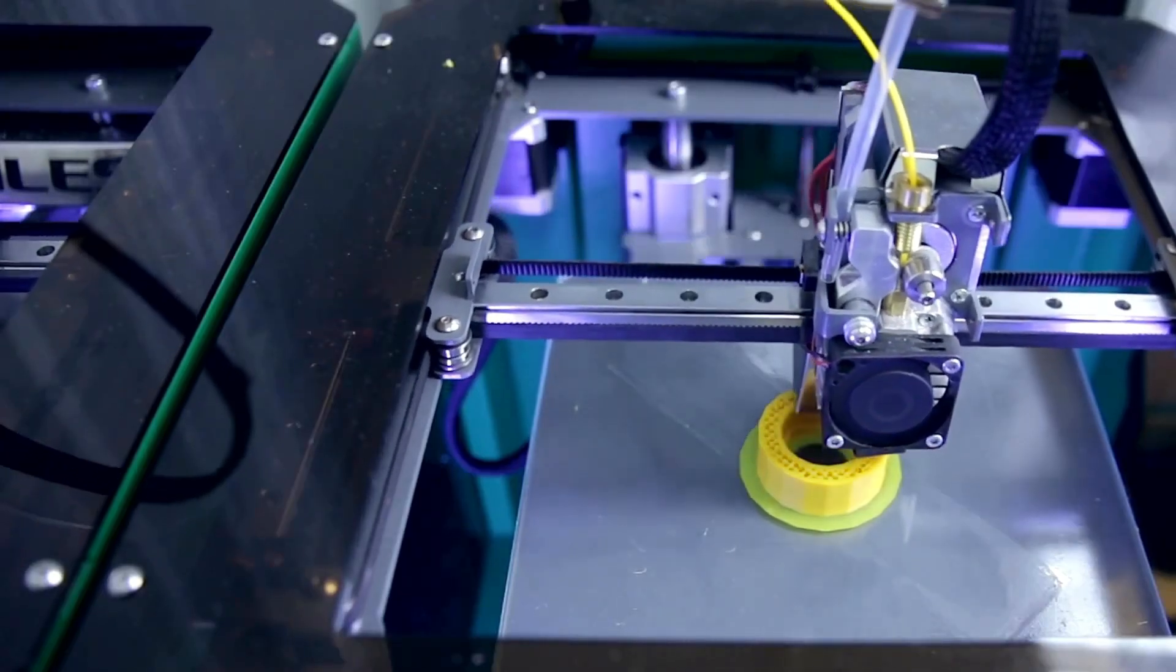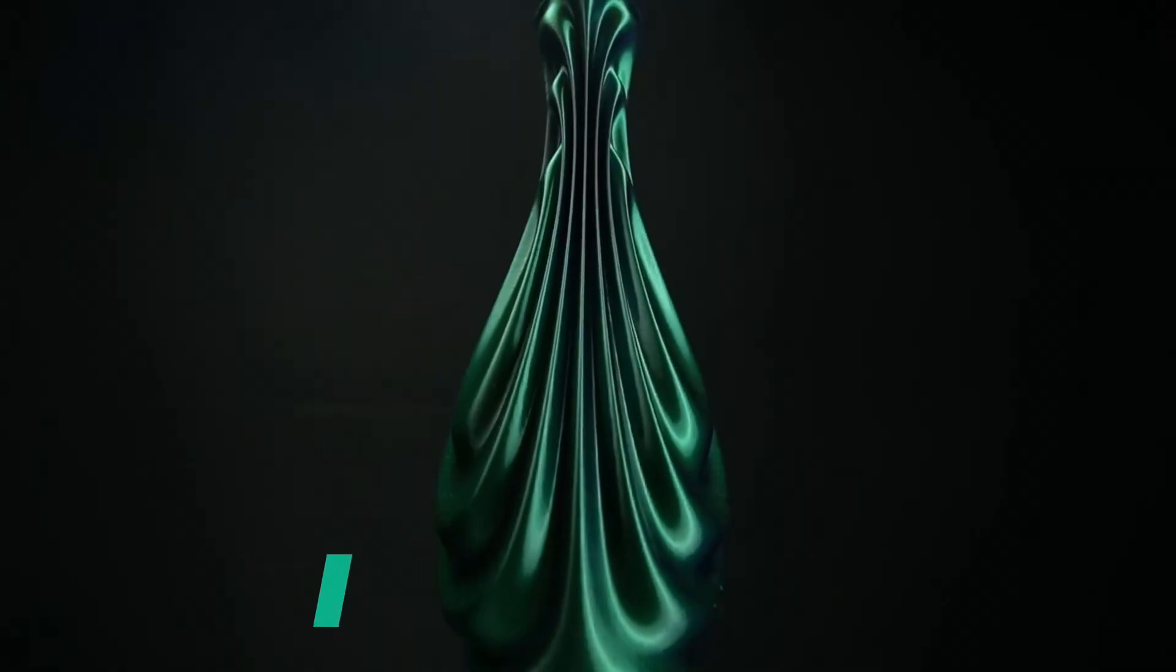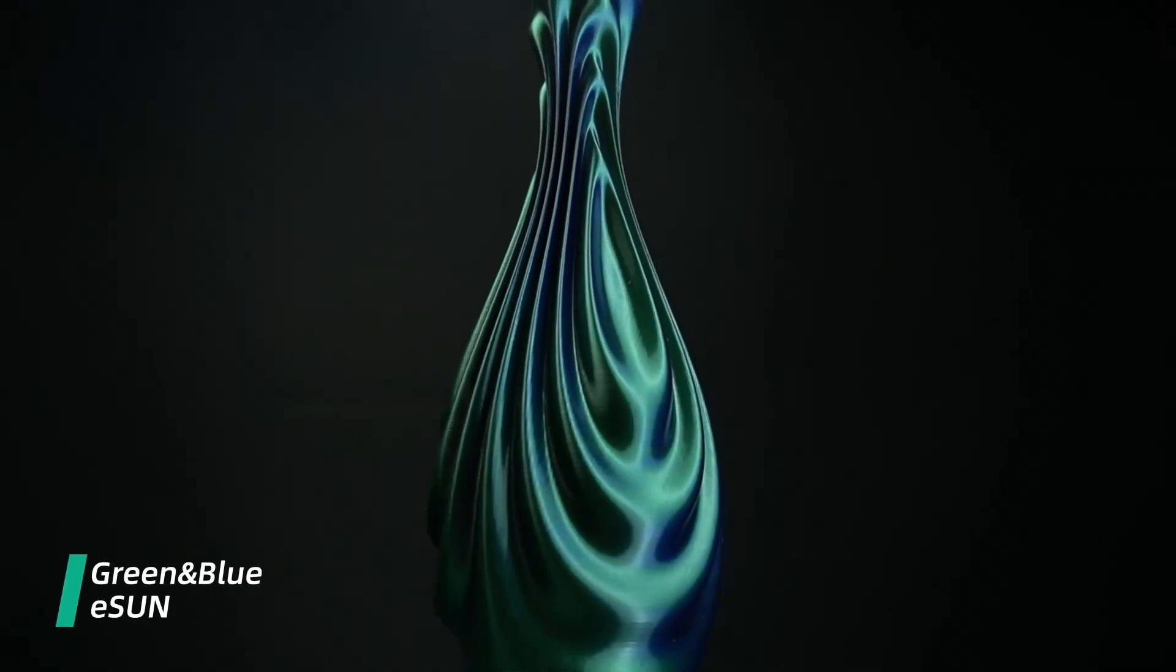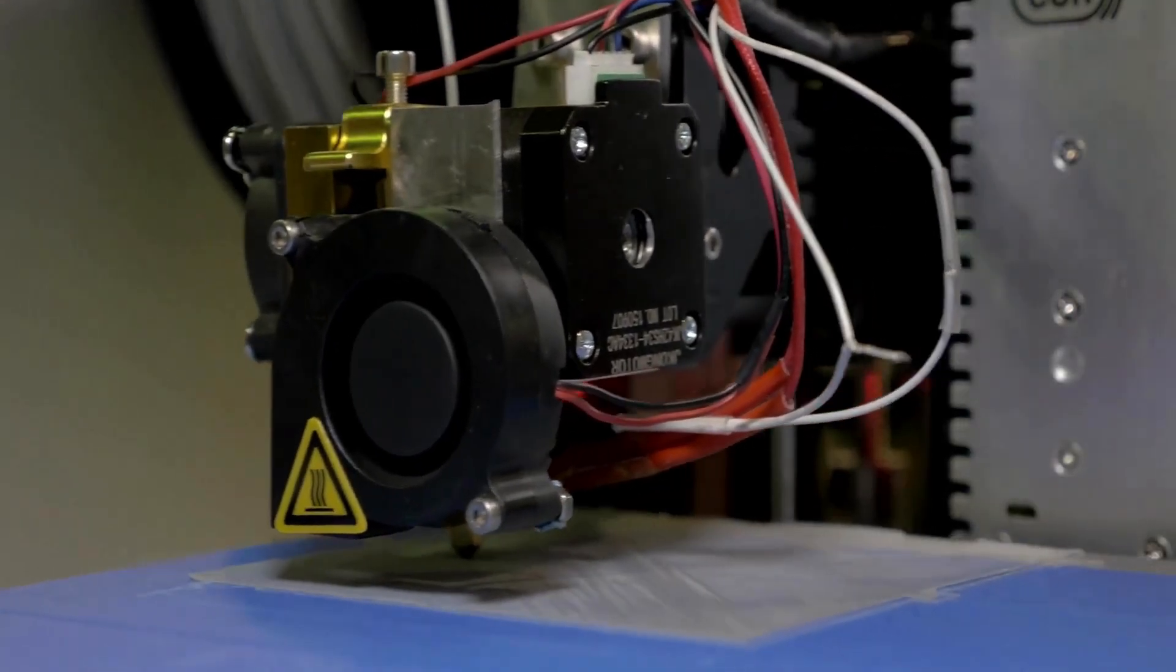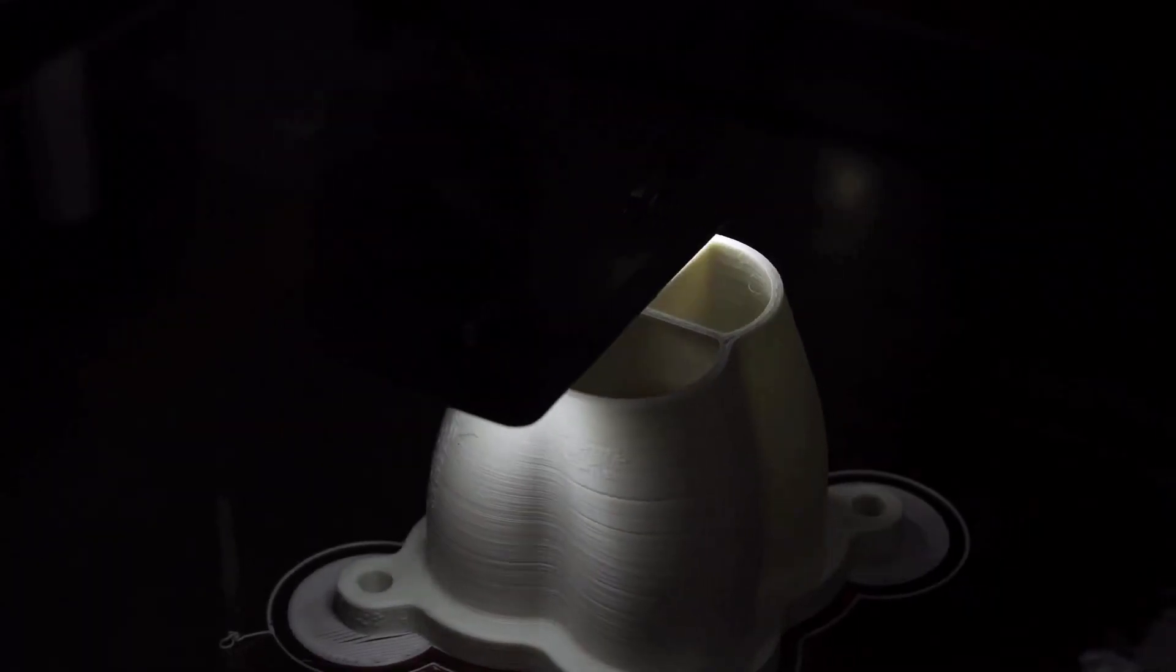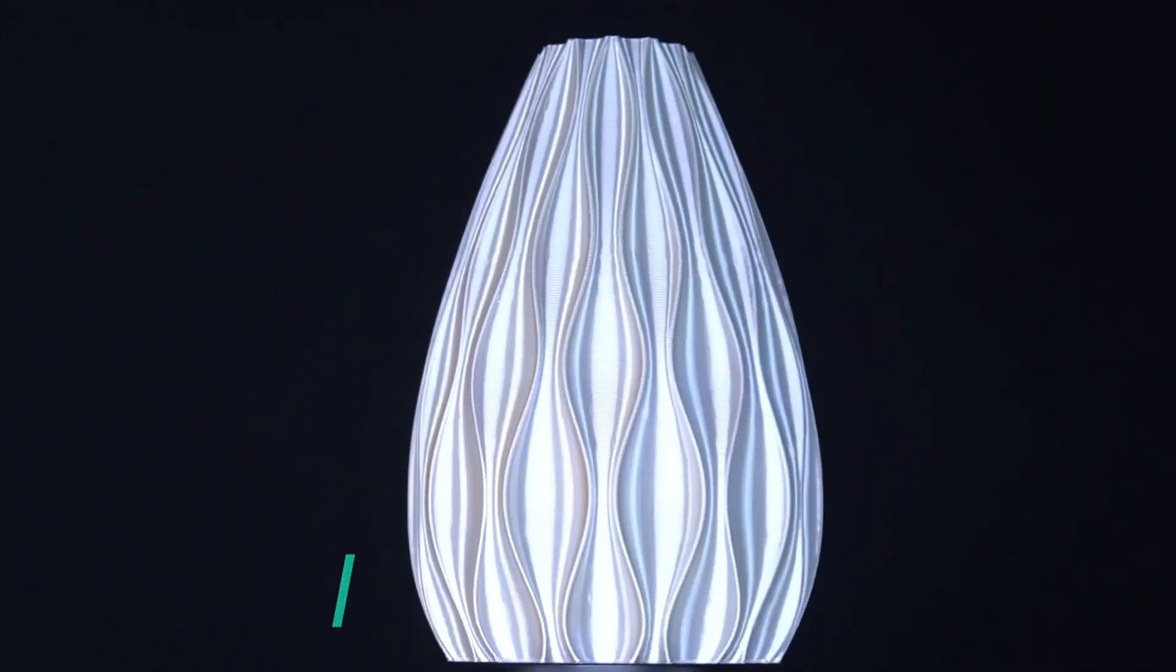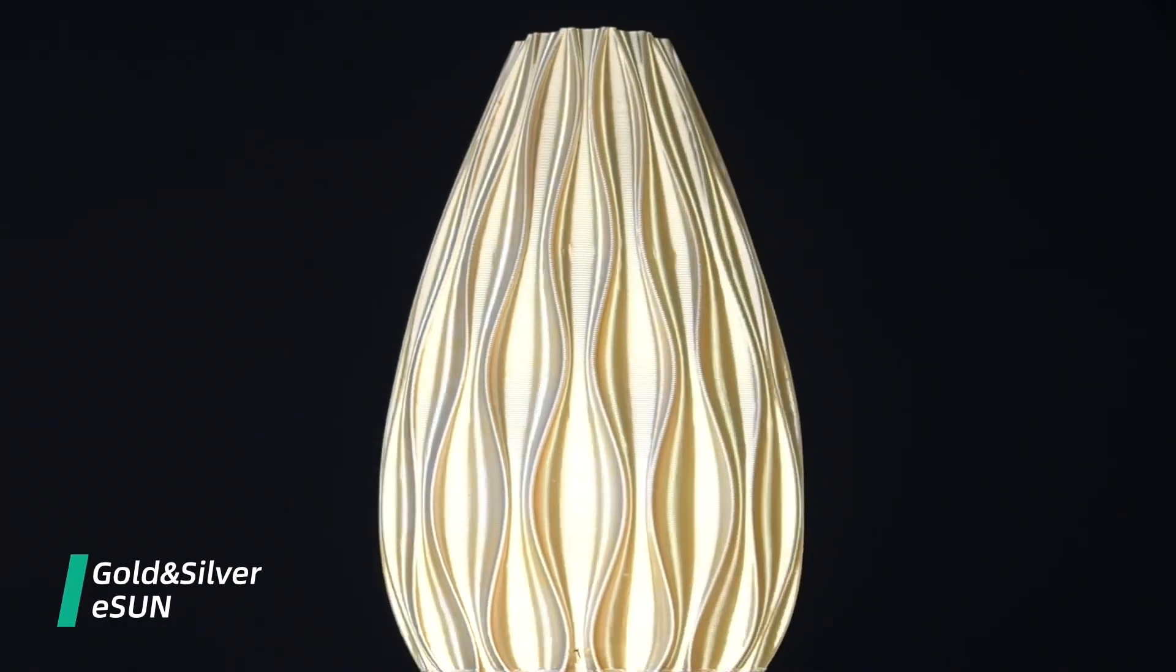Choosing the right filament for your 3D printing projects can significantly impact the quality, durability, and functionality of your prints. Two popular filament options are PLA and PETG. Each filament has its unique characteristics and applications, and today we're going to talk about the differences between PLA and PETG filament for 3D printing.